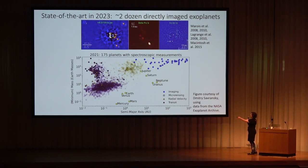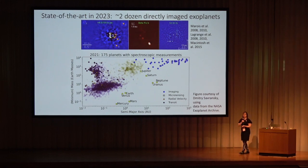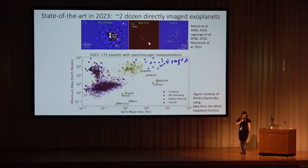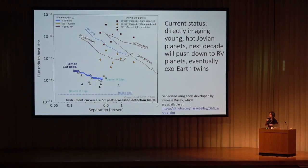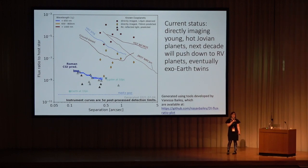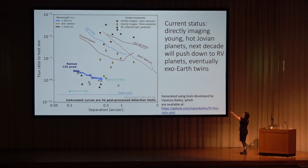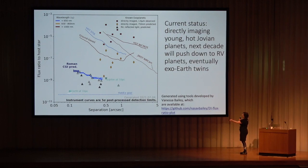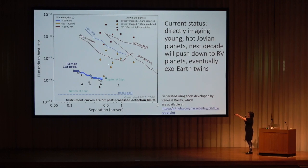About 200 planets have spectroscopic measurements to date, and a significant fraction of these are the directly imaged exoplanets. The planets we're imaging to date are essentially young, hot, Jovian planets — that's what we have the contrast to do now. But the story of this field over the next couple of decades is going to be about pushing down to higher and higher contrasts: from imaging planets in their thermal emission now, into habitable zone exoplanets, imaging some RV planets first.